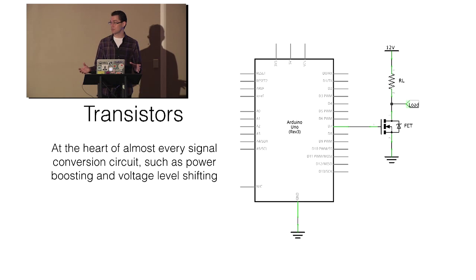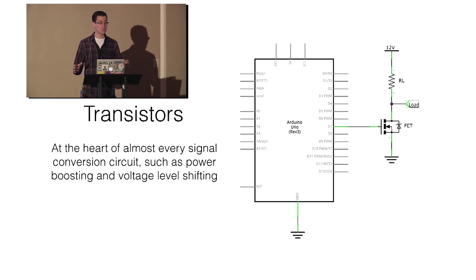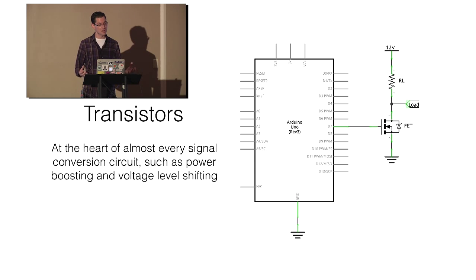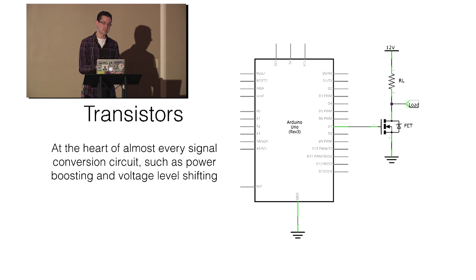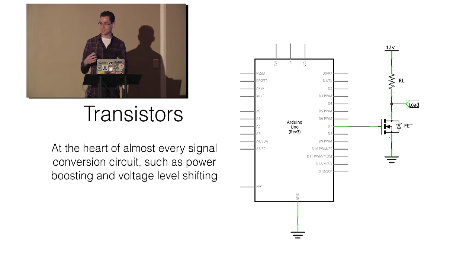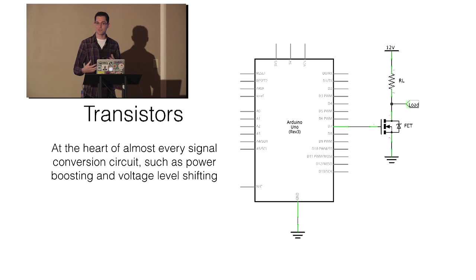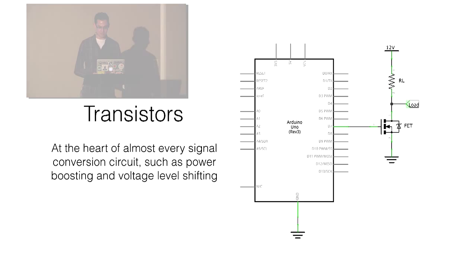A lot of circuits and chips do all this transistor work for us and give us a nice easy-to-use package. If you've ever used an Arduino with a motor shield — and if you haven't, when you build your servo bot later today you will — these motor shields have an input for your pin and outputs for the motor. At the heart of it is a series of transistors. Anytime you see these digital circuits using chips that are converting signals for you, at the heart is a transistor, and that is how it does it.